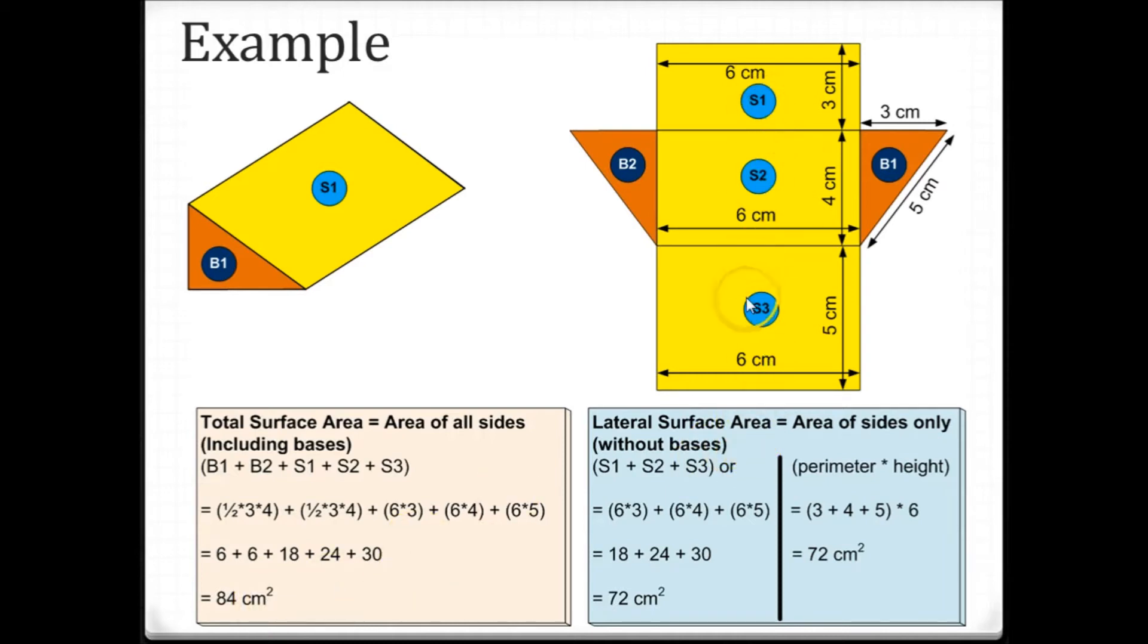Now lateral surface area is only s1, s2, and s3. So that comes out to be 18, which we already calculated—6 times 3 is 18—plus 24, plus 30. So that is 72 centimeters squared.